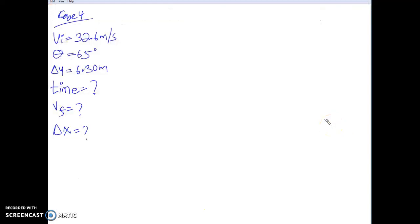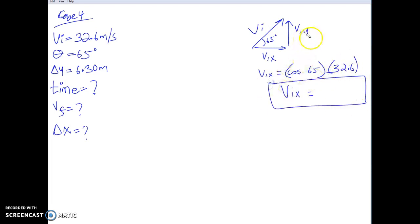And to start out, we're going to start in a similar fashion to everything that we've been doing so far. First things first, let's start out with our VIX and VIY. And there is your VI, 65 degrees. VIX equals cos of 65 times 32.6. What do you get for your VIX? VIX is 13.8 meters per second.